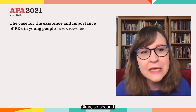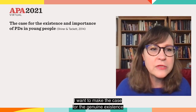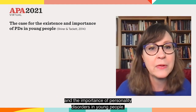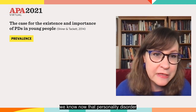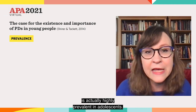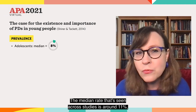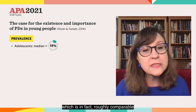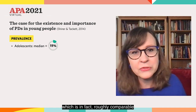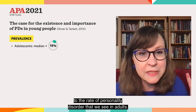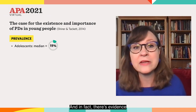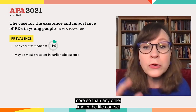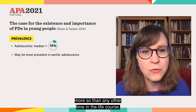So second, I want to make the case for the genuine existence and the importance of personality disorders in young people. For one thing, we know now that personality disorder is actually highly prevalent in adolescents. The median rate that's seen across studies is around 11%, which is roughly comparable to the rate of personality disorder that we see in adults. And in fact, there's evidence that personality disorder may be most prevalent in early adolescence, more so than any other time in the life course.